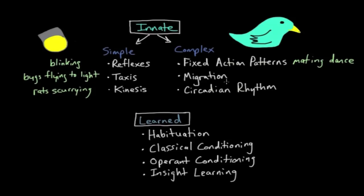Migration is another complex behavior. You can think of it in context of birds as birds flying south for the winter. So migration is another complex form of an innate behavior.